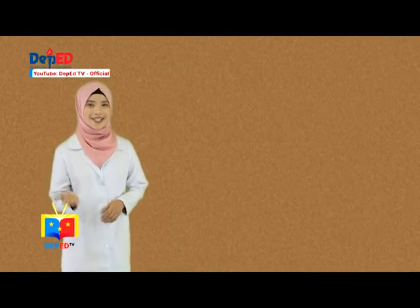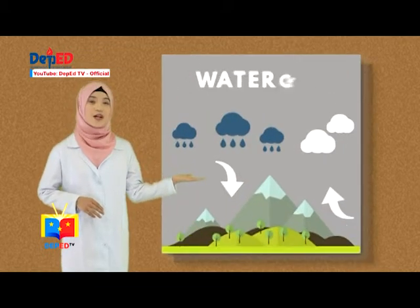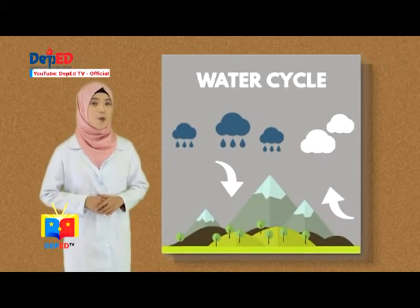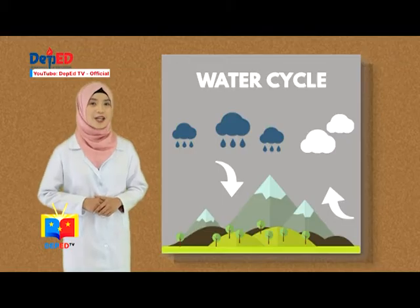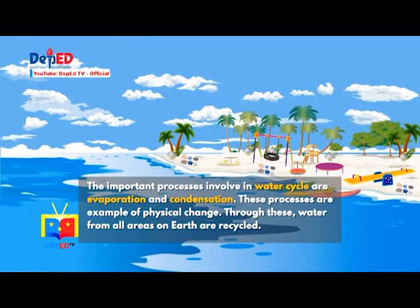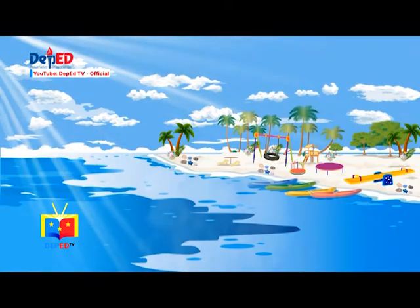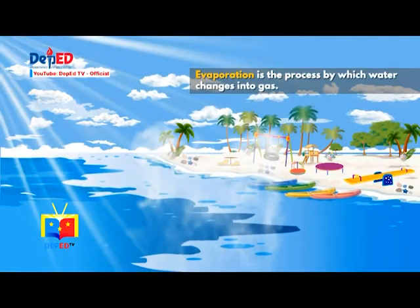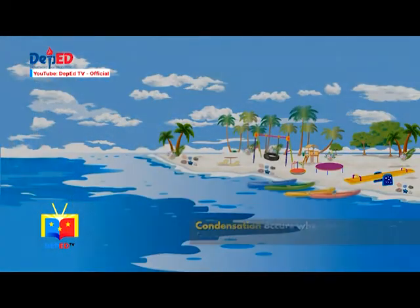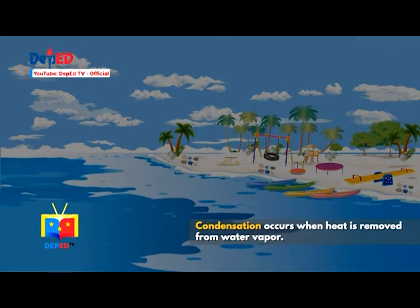Picture 2 shows the water cycle. Why is the water cycle a useful process in our daily lives? The important processes involved in the water cycle are evaporation and condensation. These processes are examples of physical change. Through this, water from all areas on Earth is recycled. Evaporation is the process by which water changes into gas, and condensation occurs when heat is removed from water vapor.